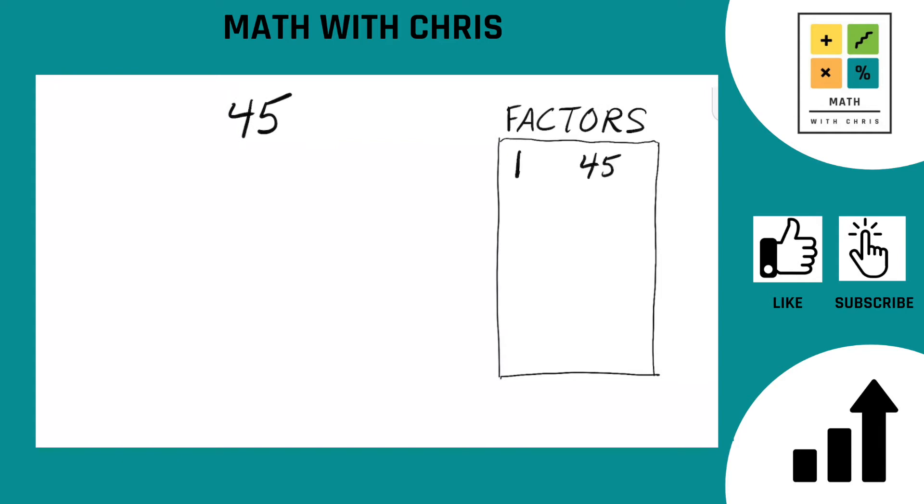Now we're going to go to the factor tree. Break this down two branches off the 45. Can we think of any two numbers that multiply together to give you 45? The most obvious is probably 5 times 9.